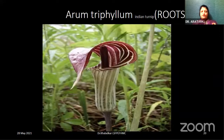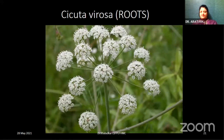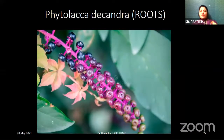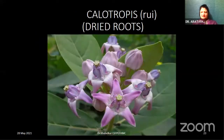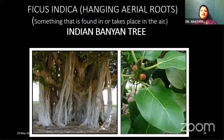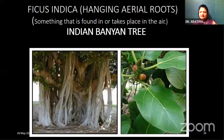Next, Cicuta virosa — a very good drug for convulsion — the roots are used. Then Phytolacca decandra; phyto means plant, lacca means red; you can see the red color leaves and berries. Then Calotropis, also called Rui, using dried roots — a very good respiratory drug often used for religious purposes. Next, Ficus indica — the hanging aerial roots of the Indian banyan tree are used. It's a classic example of hanging aerial roots, and Ficus indica is the only drug prepared from hanging aerial roots.